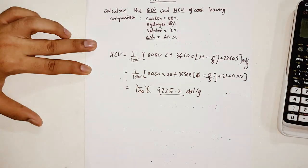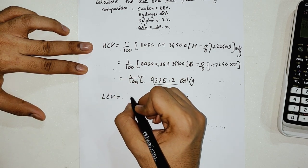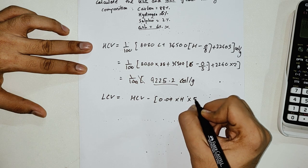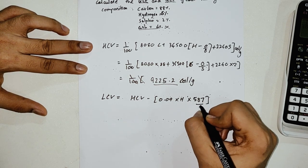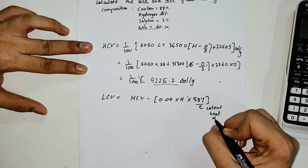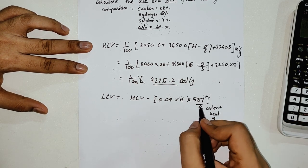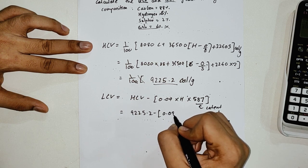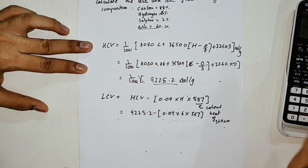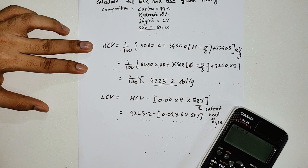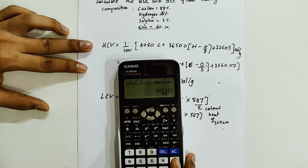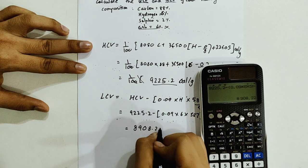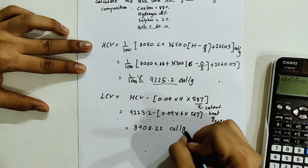Now finding LCV: LCV = HCV − 0.09 × H × 587. Substituting: 9225.2 − 0.09 × 6 × 587. The answer from the calculator is 8908.22 cal/gram. This is the final answer for Problem 2.